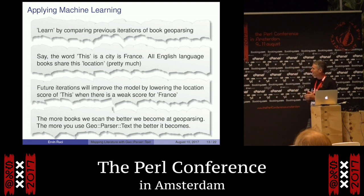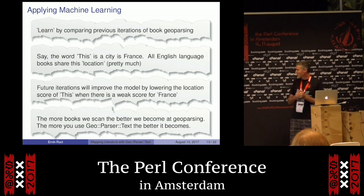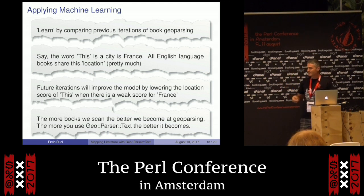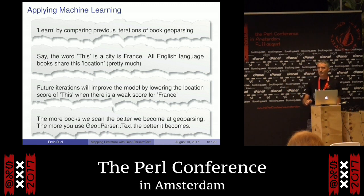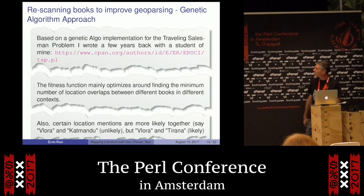So the more books I scan, the better the geoparsing becomes. That's why I'm so unhappy that I cannot get those 60 petabytes of Google digitized books. But whatever I can get is there. And also, if you use geoparser-text, the more you use it, the better it becomes because it retains all the knowledge of the previous work.